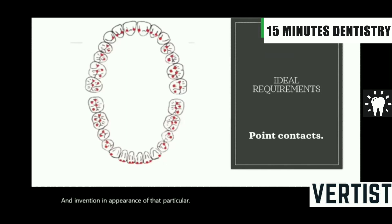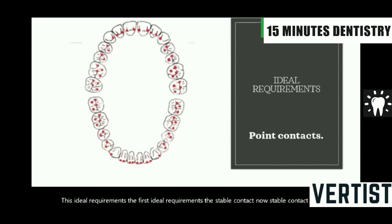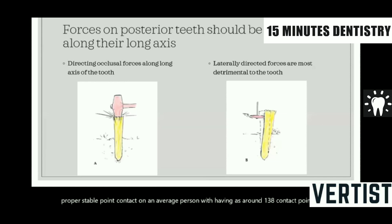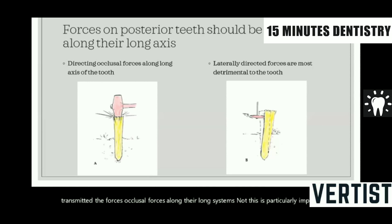There are certain ideal requirements for occlusion. The first ideal requirement is stable contact — the lower teeth should be able to contact the upper teeth in a stable manner. On average, a person with teeth has around 138 contact points between the upper and lower teeth. Another important ideal requirement is to transmit occlusal forces along the long axis of the tooth. This is particularly important for the posterior teeth, as it is not always possible for the maxillary anterior teeth because they are proclined. But for all other teeth, the occlusal forces have to be transmitted along the long axis.